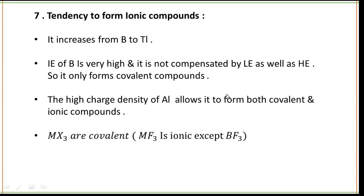Next is the tendency to form ionic compounds, which increases from boron to thallium. The ionization enthalpy of boron is very high and is not compensated by lattice energy or hydration energy — that is why boron only forms covalent compounds. The high charge density of aluminium allows it to form both covalent and ionic compounds, making aluminium amphoteric. MX₃ type compounds in group 13 are covalent in nature, while MF₃ is ionic, except BF₃.